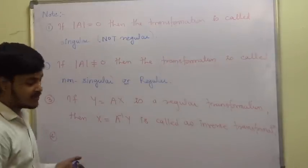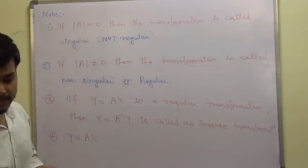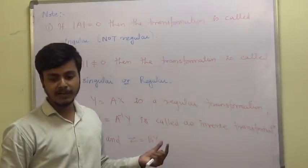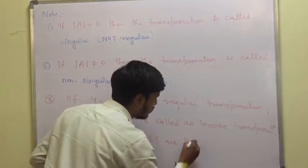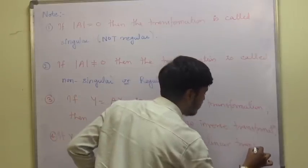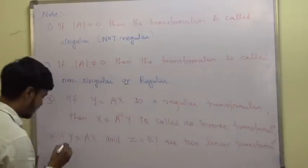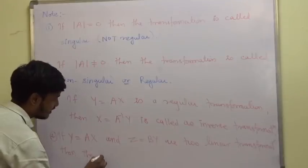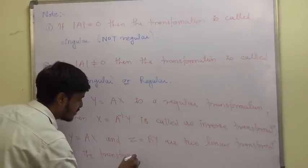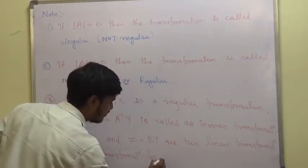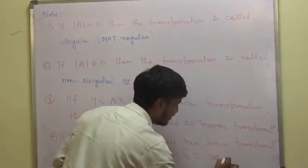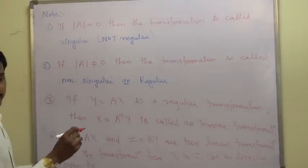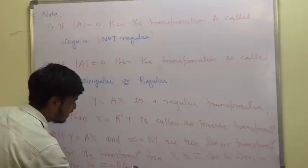Note 4: if you have two linear transformations y = Ax and z = By, then the transformation from x to z can be directly given by z = B · A · x.